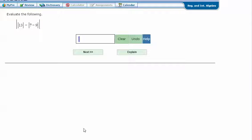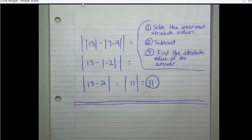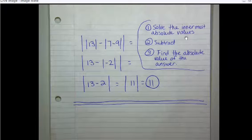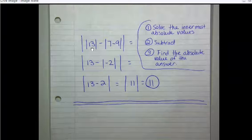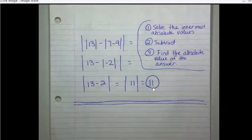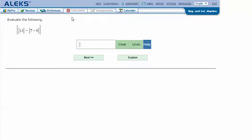Evaluate the following: the absolute value of 13, minus the absolute value of 7 minus 9, and then the absolute value of that answer. The larger bars mean the absolute value of whatever we get inside. First I need to solve the innermost absolute values, kind of like solving the innermost parentheses. The absolute value of 13 is 13, and 7 minus 9 is negative 2, so the absolute value of negative 2 is 2. Then 13 minus 2 is 11, and the absolute value of 11 is 11.